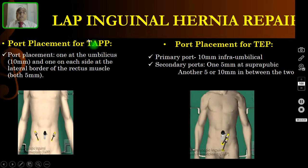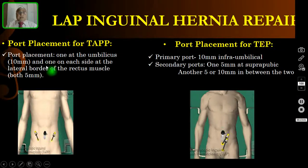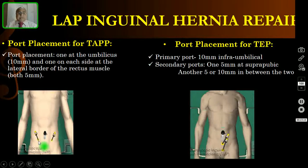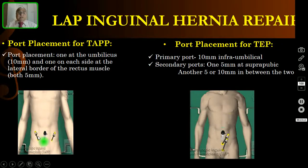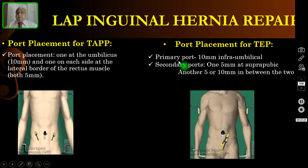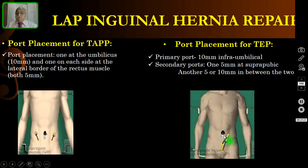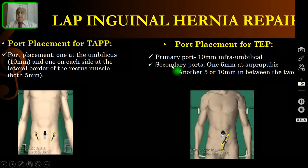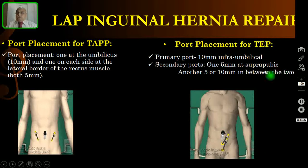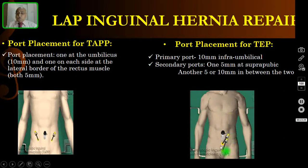For port placement in TAPP repair: the first port is a 10 mm port at the umbilicus, then one 5 mm port on each side at the lateral border of the rectus muscle, at or slightly below the level of the umbilicus. For TEP repair: the primary port is a 10 mm infraumbilical port placed under vision, then a 5 mm port at the suprapubic area, and a 5 or 10 mm port between these two as the third port.